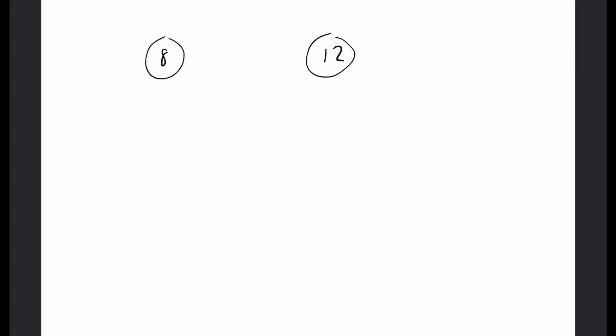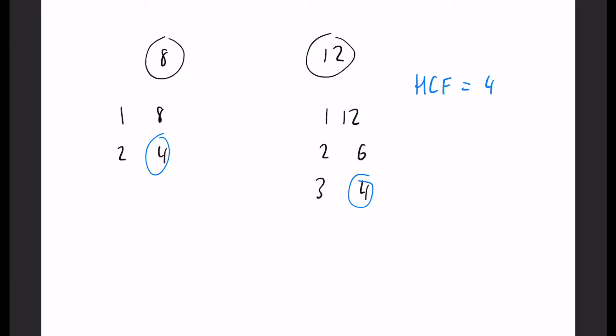Let's put this into practice with the numbers 8 and 12. These numbers are quite small so we can simply list the factors. For 8 we have 1, 2, 4, and 8. For 12 we have 1, 2, 3, 4, 6, and 12. We can straight away see that the highest factor shared between the two is 4, so our HCF is 4.